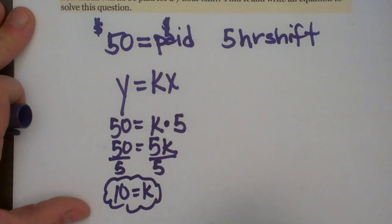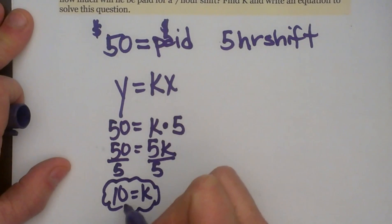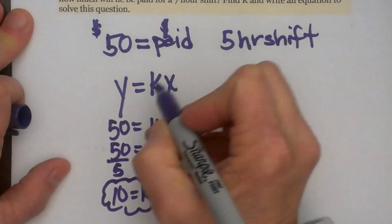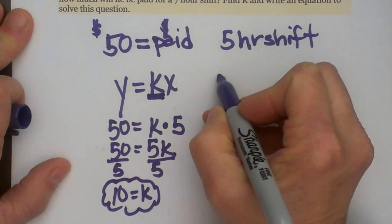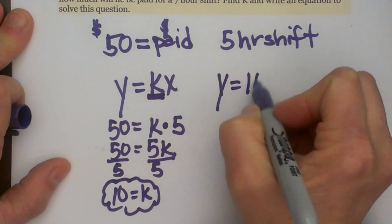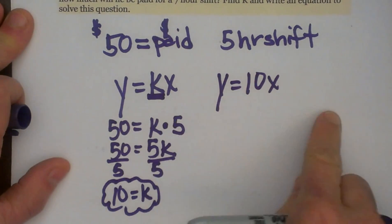So that's our constant. So now what's our equation? Well, to write the direct variation equation, all we do is plug in our value right here, the K that we find, the constant. So we'll have Y equals 10X. That is our equation.